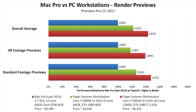Starting with rendering previews, you can see in this chart that we divided our testing between standard footage and VR footage. The difference between each was not actually all that significant, so we can just look at the overall average. Our PC workstation that is half the cost of the Mac Pro should be able to render previews about 22% faster, and the higher-end PC should be able to render previews about 43% faster.